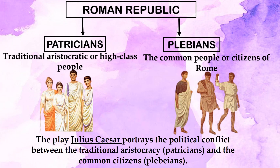To understand who the plebeians are, you need to look at the structure of Rome. The government in ancient Rome was a republican form — the Roman Republic. It consisted of two classes: the patricians, the traditional aristocratic high-class people, and the plebeians, the common people of Rome. The play portrays the conflict between these two groups. Tribunes were the spokespersons for the common people, and their number eventually increased from two to eight.